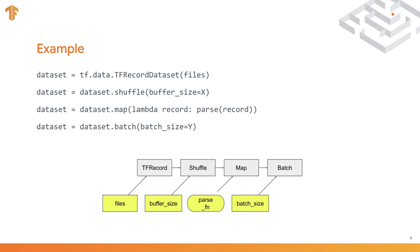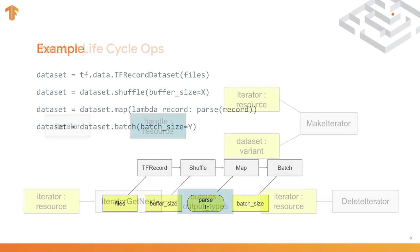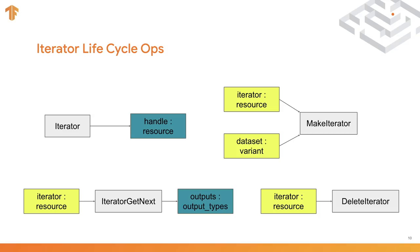To tie it together: the four lines of input pipeline definition roughly correspond to a sequence of ops with their inputs and attributes. Up to this point, we've only talked about how to define the input pipeline, but naturally you would also want to enumerate the elements inside of it. That's where the iterator ops come in, because an iterator can be thought of as an instance of a dataset that has a state and allows you to enumerate elements in sequential order.